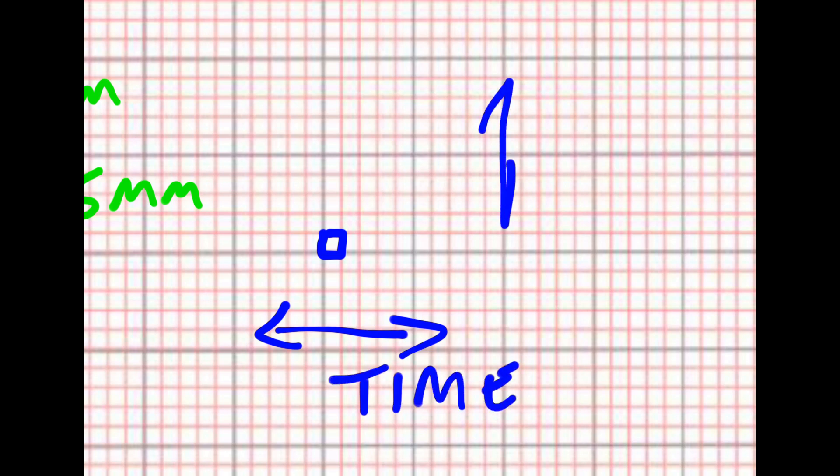One small box is one of those small boxes. When you're looking at an EKG paper from left to right, you're talking about time. When you're looking up and down, you're talking about voltage.